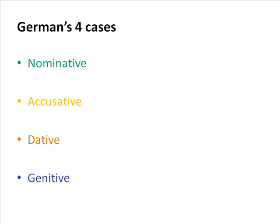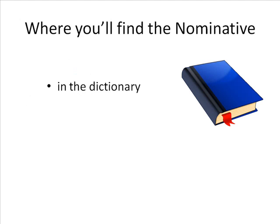German has four cases: the nominative, the accusative, the dative, and the genitive. All nouns you ever come across in German have to be in one of those cases. Today I'm only going to look at the nominative — I'll be covering the other three cases in the next three podcasts. The nominative case is the one you find in the dictionary, and the case you'll be taught first for any word where case makes a difference — that's mainly determiners, adjectives, and pronouns.